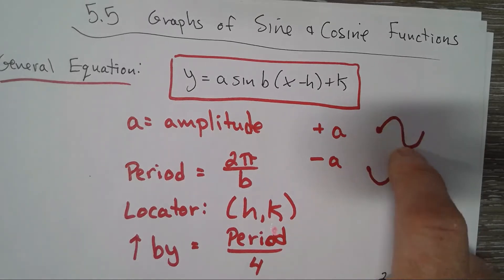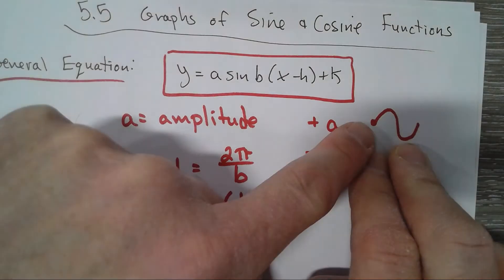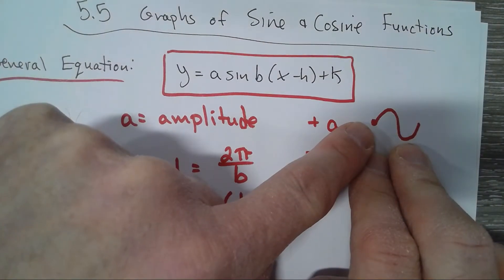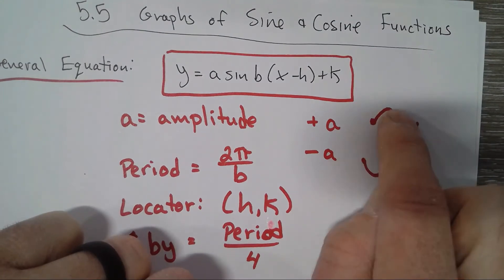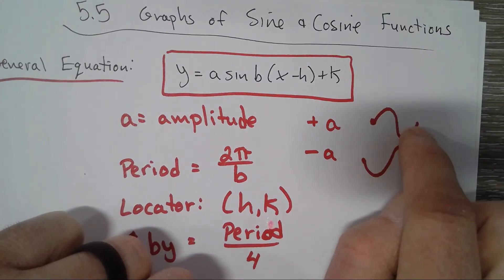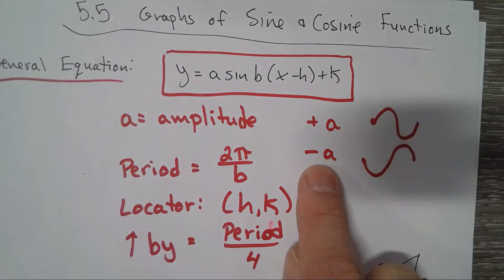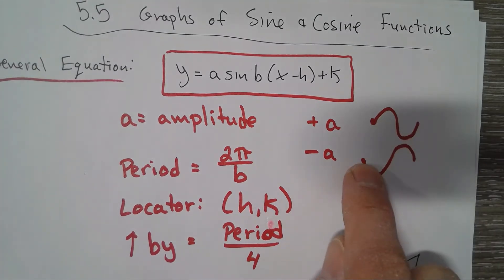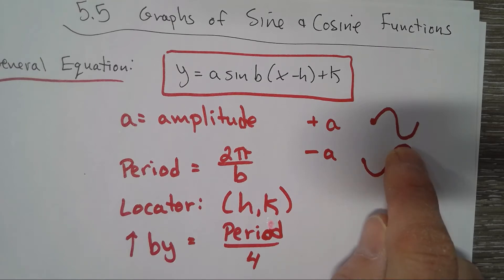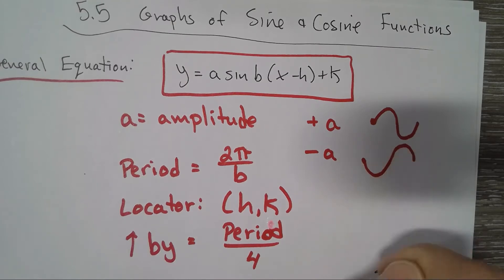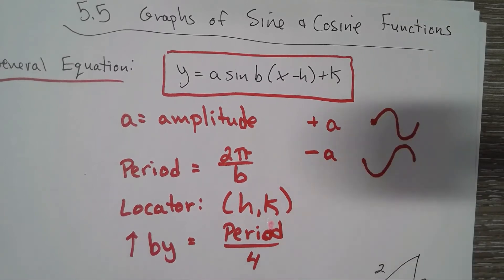One period of y equals sine x shows the general shape: you start at the locator point, go up, all the way down, and back up to where you started in terms of the y-value. If 'a' is negative, you start going downward to the valley, all the way up to the peak, and back to the midline. So if 'a' is positive we start going up; if negative, we start going down.